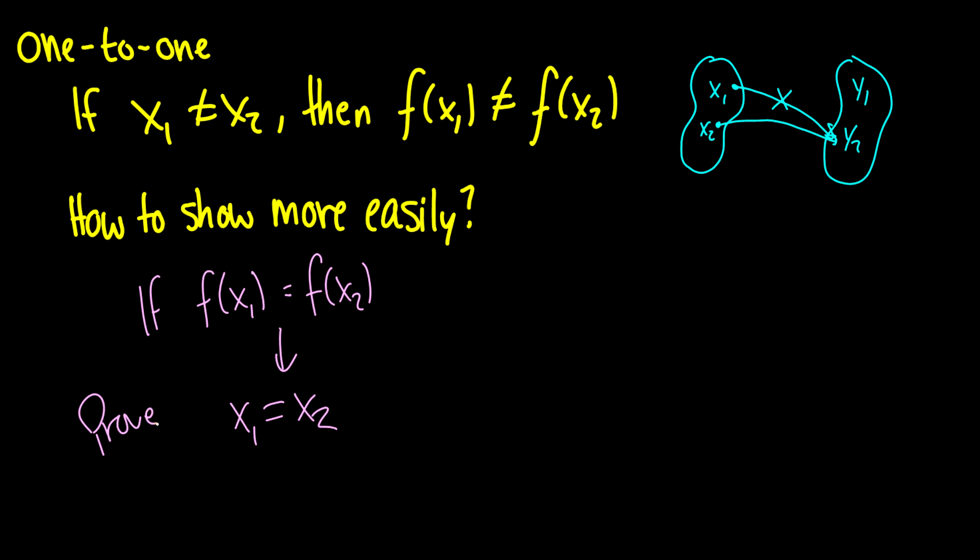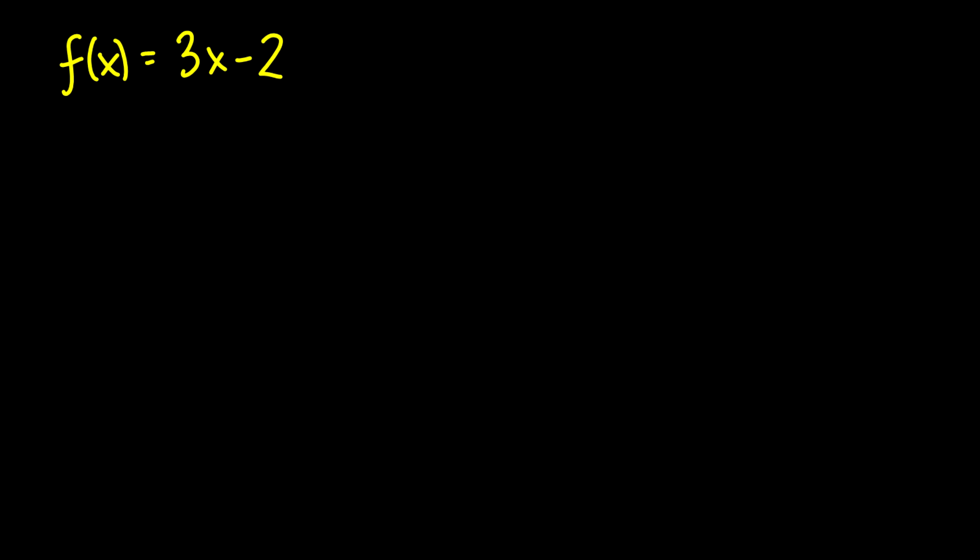Let's do an example. Let's take f(x) equals 3x minus 2. So we say f(x1) equals f(x2), which means that 3x1 minus 2 equals 3x2 minus 2. We can bring the 2 over to the right side, so we get 3x1 equals 3x2, then divide by 3, and we find that x1 equals x2.